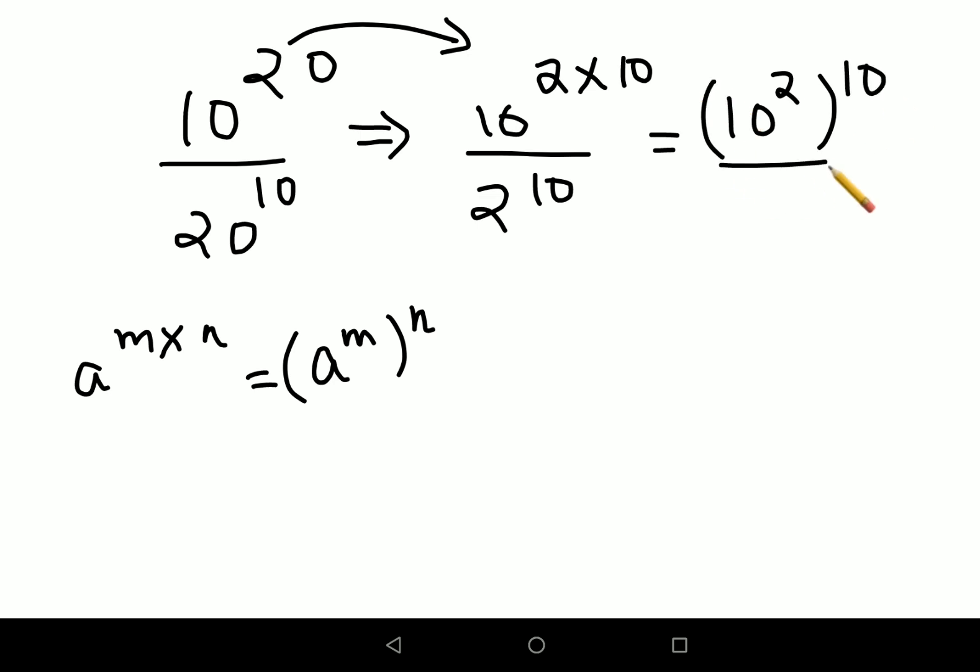Now this becomes 10 raised to 2, which is 100, raised to 10 in the numerator, and 20 raised to 10 in the denominator. Now remember, a raised to m divided by b raised to